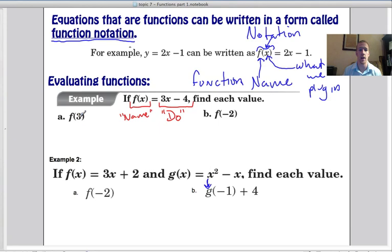So f(3). That just means we're plugging a 3 into this function, into the f function. Which means we substitute a 3 in here, and that's what we do. So that would be 3 times whatever we plug in. We're plugging in a 3, so 3 times 3 minus 4, which is 9 minus 4 equals 5. That's our answer. f(3) = 5.